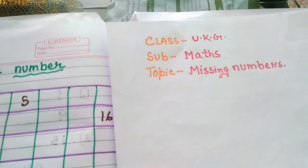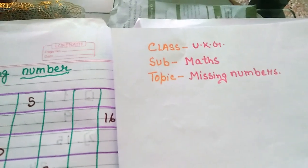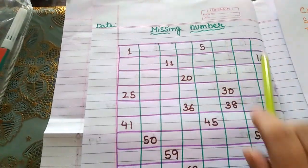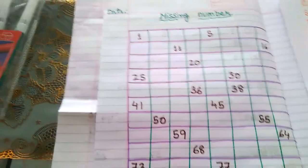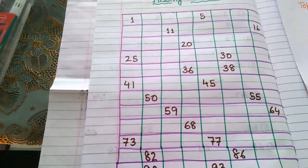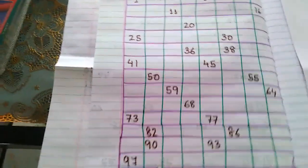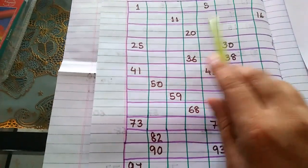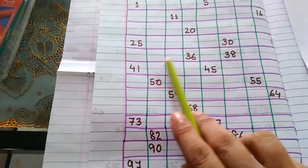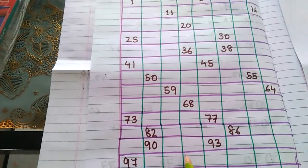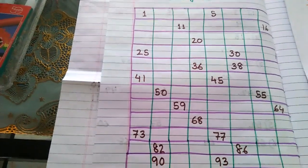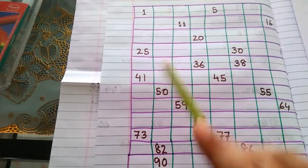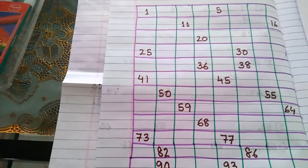What is missing numbers? Do you know? Here I draw one box. I have written a lot of numbers — say, one hundred. But see, there are many boxes which are empty. Bohat saare boxes khali hain na? There are no numbers — numbers are missing. Jo number nahi hai, usi ko bolte hain missing numbers. They are called missing numbers.